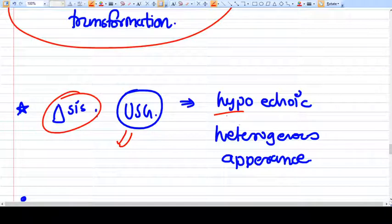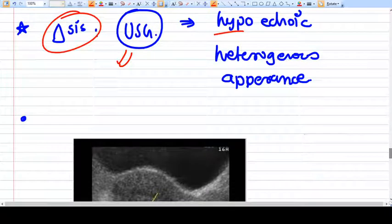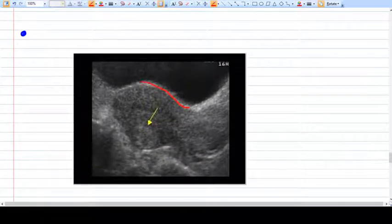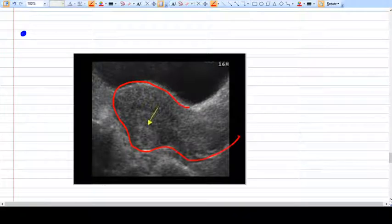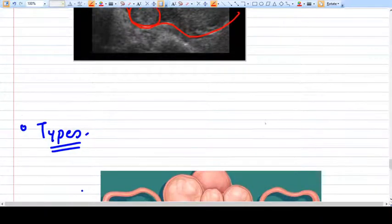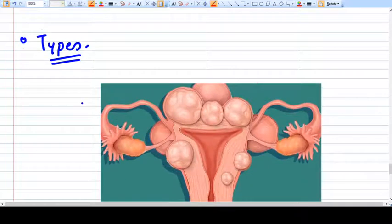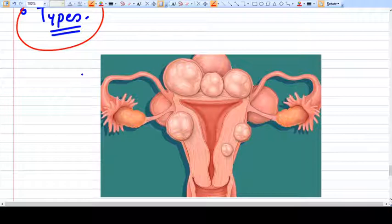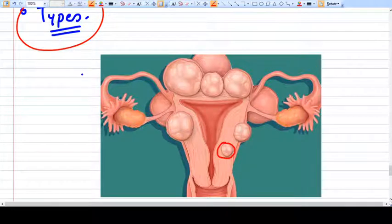When in USG you see hypoechoic or heterogenic appearance lesion in the fibroid - this is the uterus and this is a fibroid. Now, types of fibroid are very easy to classify. Just like this fibroid is completely in the myometrium, so it's intramyometrial.